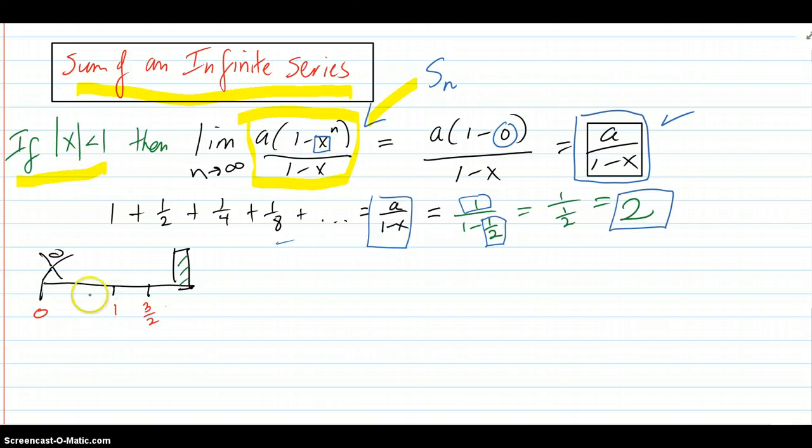Remember in a previous video, we had the person walking toward the wall. Each step they took, first step, they took half the distance to the wall. So, they had 1 on the first step. Second step, they had half the distance to the wall. So, the total was three-halves. So, the S2 for two steps was three-halves. We're going to get that same series as this.